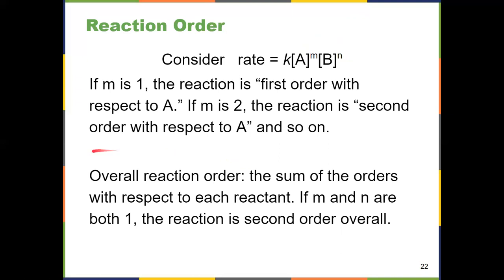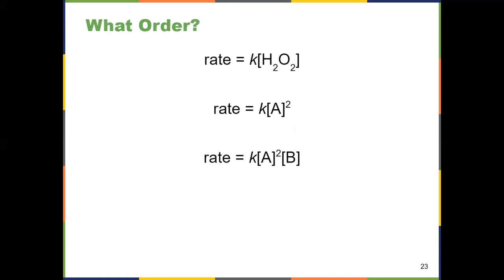You also have something called the overall reaction order, and you get it by adding up all of the superscripts. So if m and n were both equal to one, one plus one is two — the reaction would be second order overall, first order with respect to A, first order with respect to B. If m and n were both two, it would be second order with respect to A, second order with respect to B, and fourth order overall.